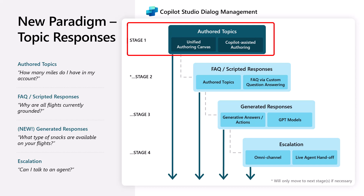These are typically experiences that the author of a conversational application wants to be in full control of and wants to author specifically for their application — usually one of the core functions of a conversational application that interfaces with an API. So this is the concept of an authored topic. We have a couple of tools inside of Copilot Studio to do that: a unified authoring canvas and a copilot within Copilot Studio that helps author topics.